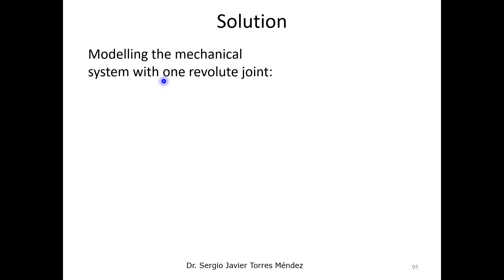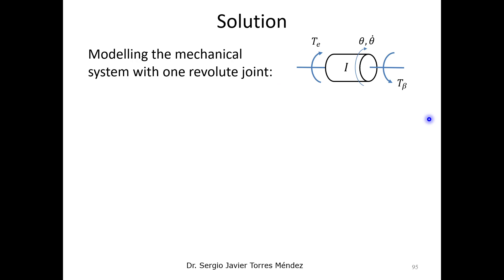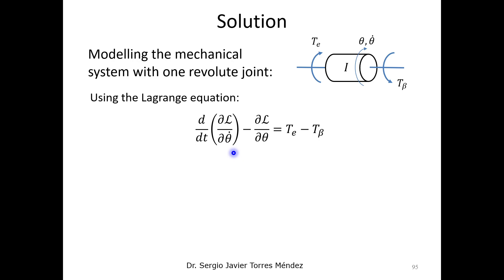Let's start with the modeling part. We need to model a mechanical system with one degree of freedom — in this case a revolute joint. Using this diagram, we can see that we have the external torque coming from the motor, and we have the torque from torsional damping as a force opposing the input torque. Using the Lagrange equation to model this system with one degree of freedom — the angle theta — we have the external torque from the motor and the torque from the torsional damping system.